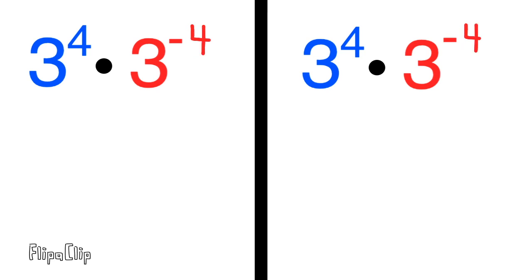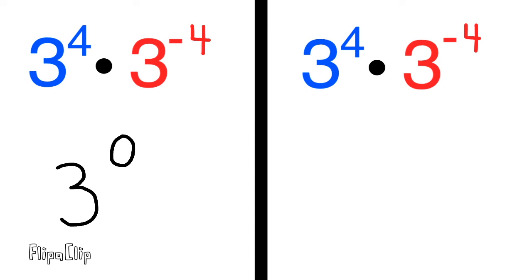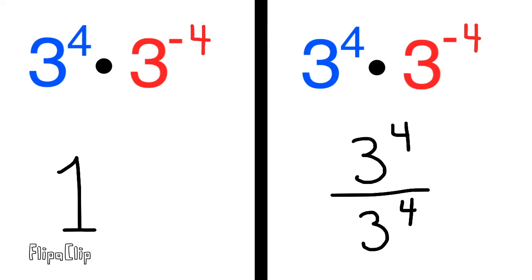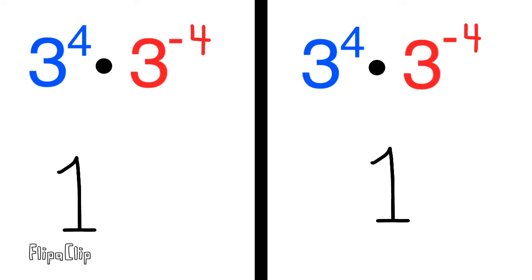Let's do one last example that will leave us with an exponent of zero and a value of one. Three to the fourth power times three to the negative fourth power. Their base number is the same, and we add the exponents — adding a negative four means four minus four, which is zero. Three to the power of zero equals one. On the right-hand side: three to the power of four stays on top since it's a positive exponent, and three to the negative four moves to the bottom, changing the exponent to a positive. Three to the power of four divided by three to the power of four is one, because any number divided by itself is one.